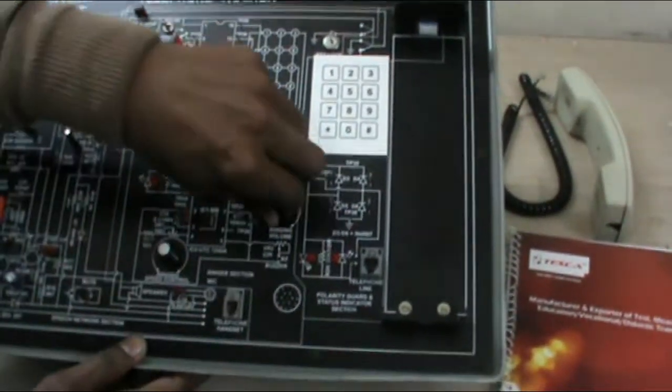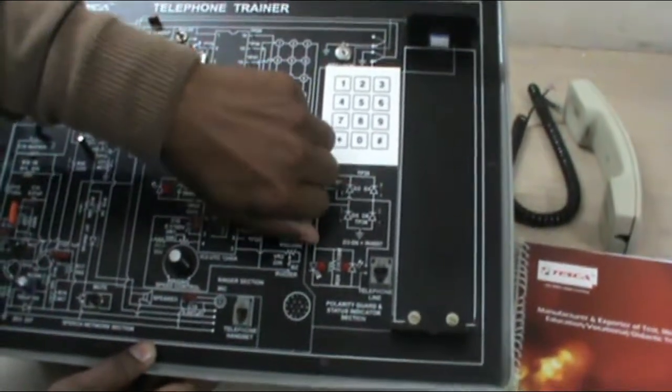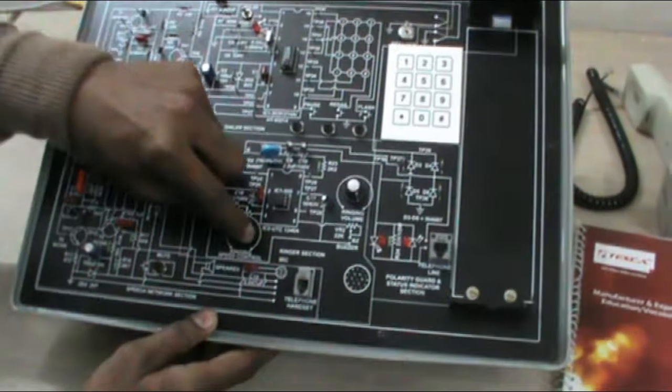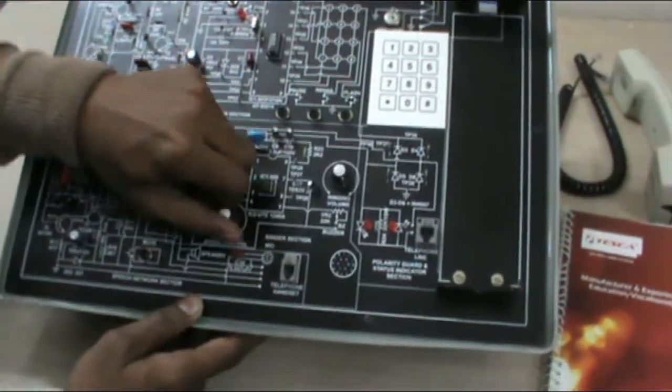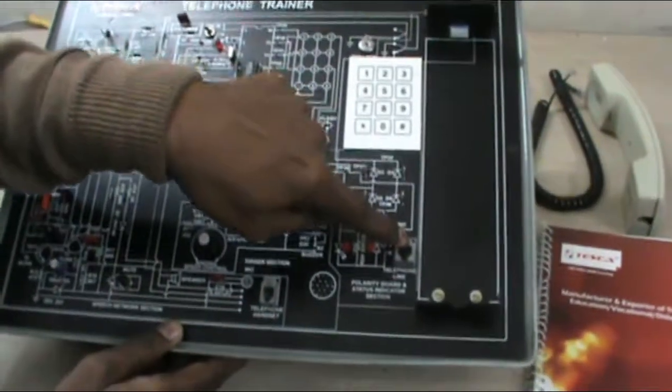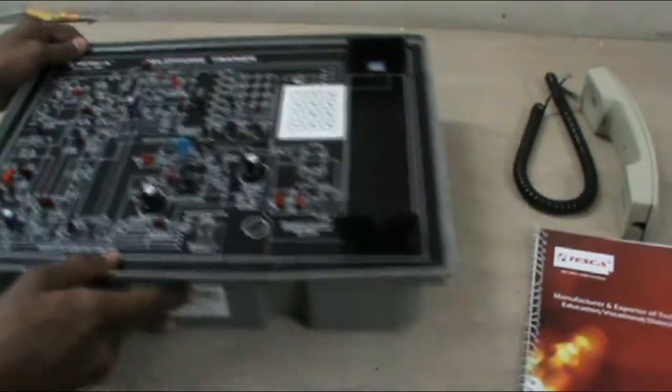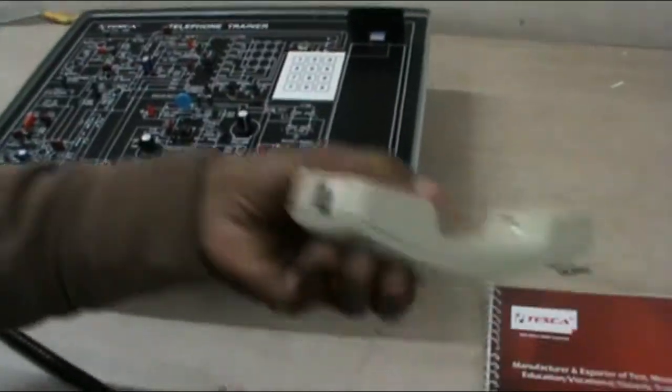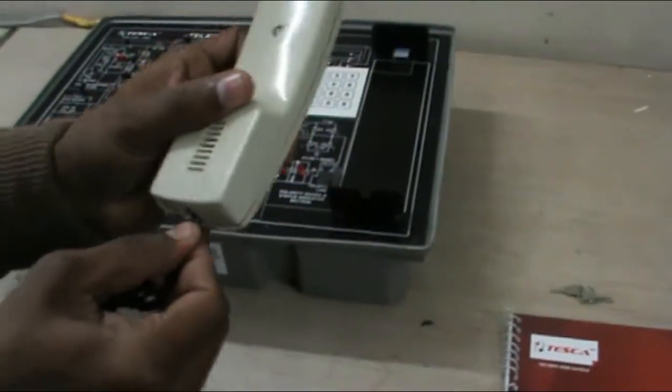You can increase or decrease your ringing volume with the help of this potentiometer. This is ringing speed control. Telephone handset jack and this is telephone line jack. This is the manual handset, just insert the cable.